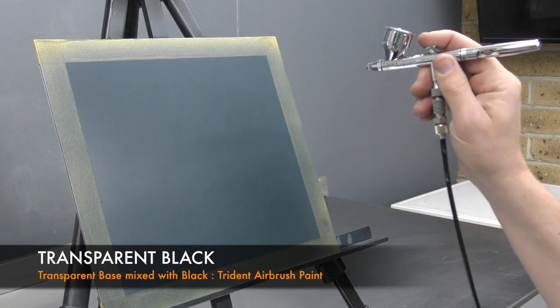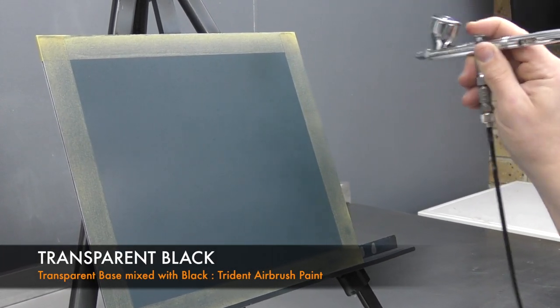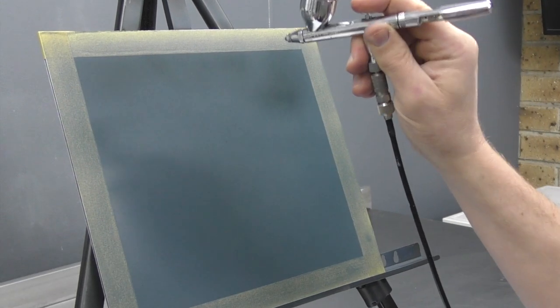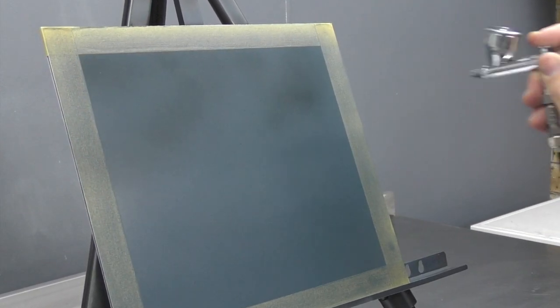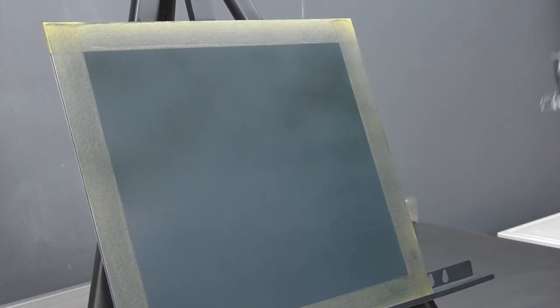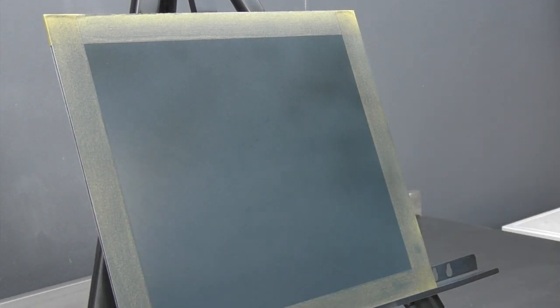Now using some transparent black, I'm just going to fog in a little bit of the background just to darken off some sections and make that background uneven. You don't have to do this, it's totally up to you, but I just didn't want it to be flat Payne's grey.